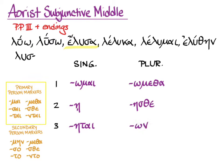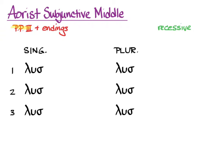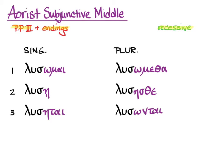With those lengthened subjunctive vowels, you get these endings: -ōmai, -ētai, -ōmetha, -ēsthe, -ōntai. These are the same as the present subjunctive middle-passive endings. Accent is recessive, and it has simple aspect. No translation until you know what kind of clause it's in. Put together, the aorist subjunctive middle of luō needs that un-augmented stem, and you can tell the difference between the present subjunctive middle, the present subjunctive passive, and the aorist subjunctive middle by looking at what stem you have.